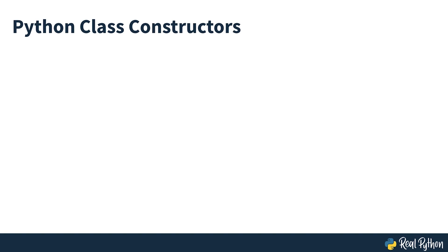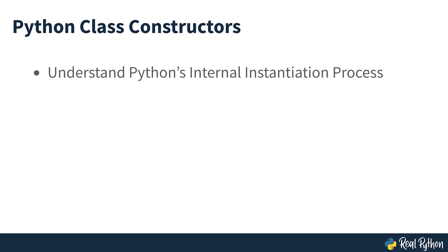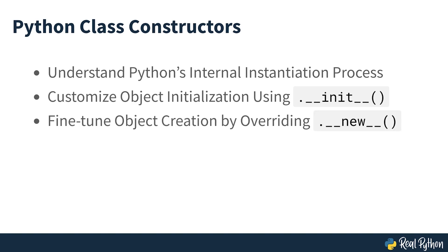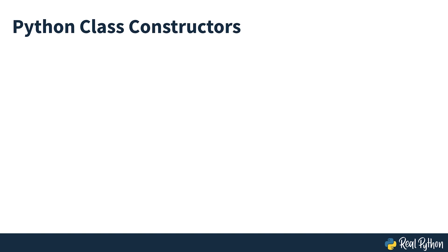In this course you'll learn how to understand Python's internal instantiation process, how to customize object initialization using __init__, and how to fine-tune object creation by overriding __new__. With this knowledge you'll be able to tweak the creation and initialization of objects in your custom Python classes, giving you control over the instantiation process at a more advanced level.